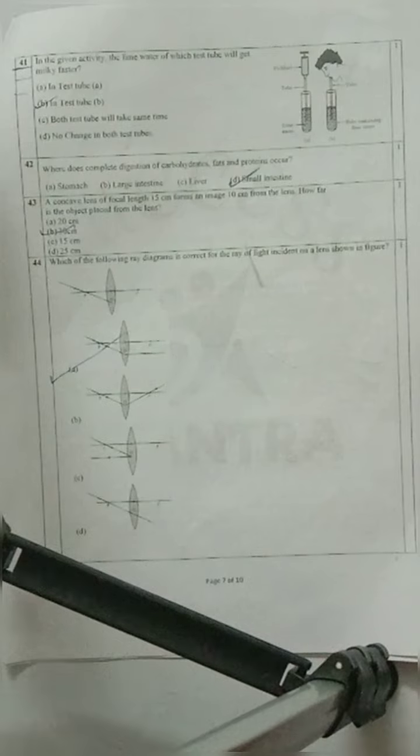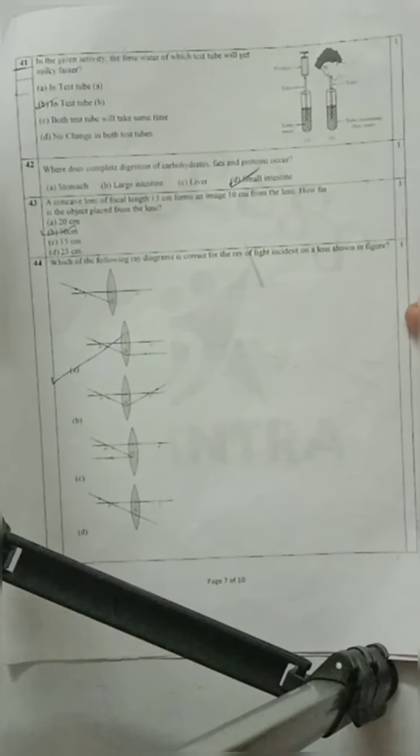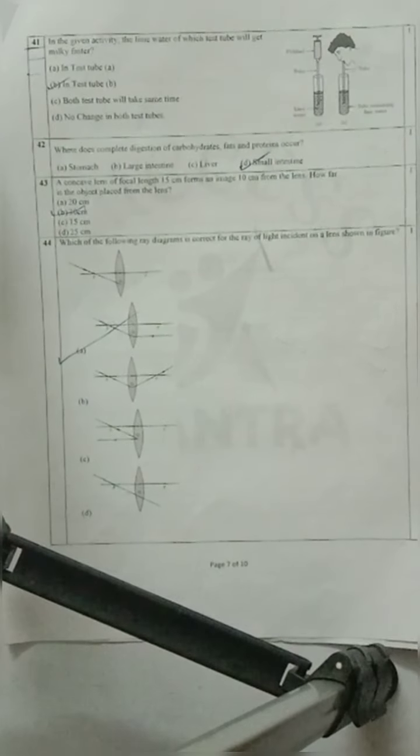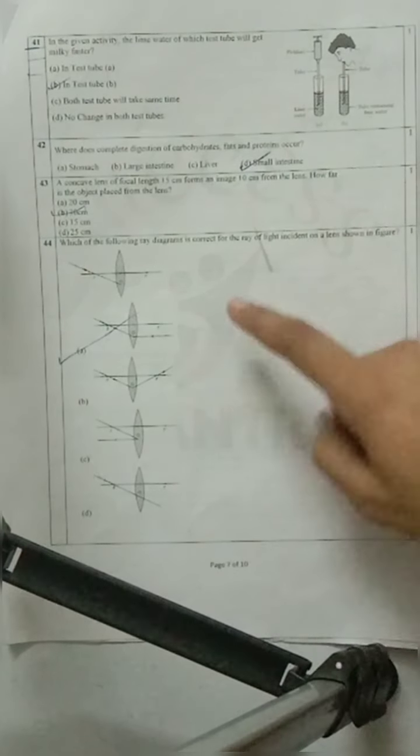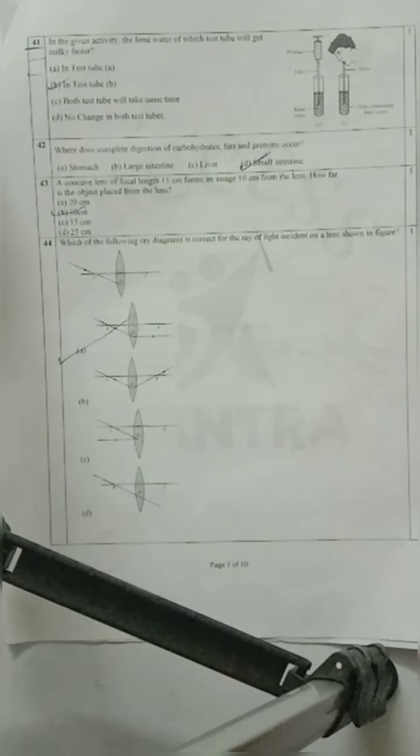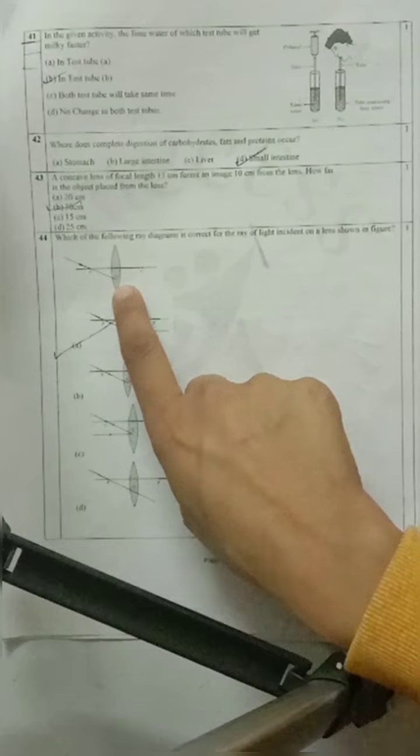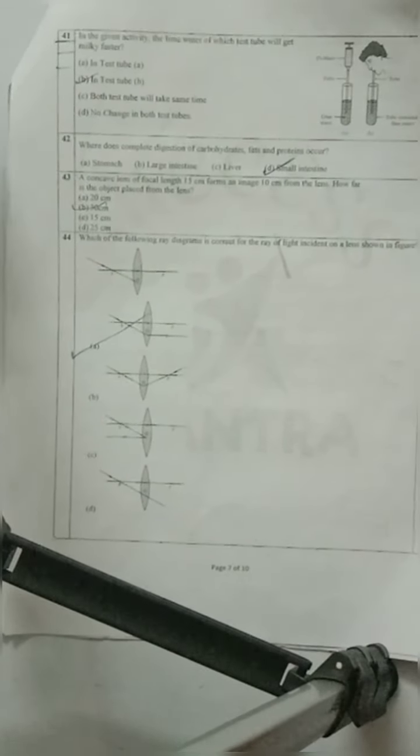Question 44: Which of the following ray diagrams is correct for the ray of light incident on the lens shown in figure? Where is the diagram correct? Which ray of light is incident on the lens? Only option A is your correct option. Here, you had to complete the diagram.